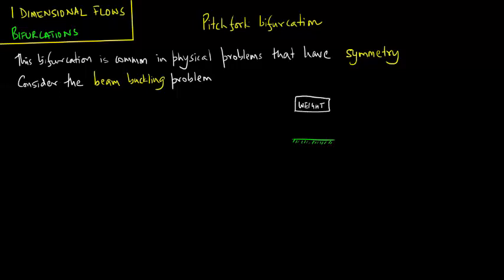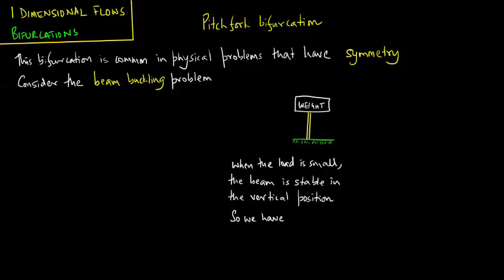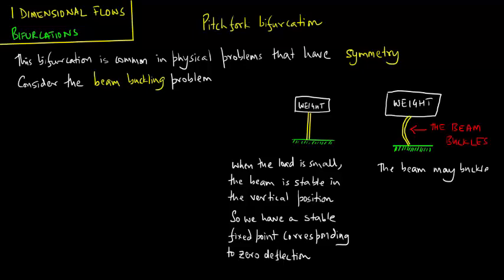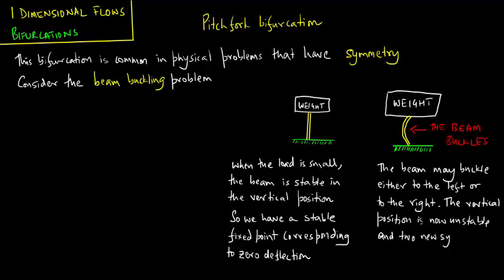We had a small weight on top of a beam and as long as the weight was small the beam was stable. When the load is small the beam is stable in the vertical position with a stable fixed point corresponding to zero deflection. Now consider the case where we have a larger weight that is placed which forces the beam to buckle. The beam buckles under the weight and may buckle either to the left or to the right. The vertical position is now unstable and two new symmetrical fixed points have been born.